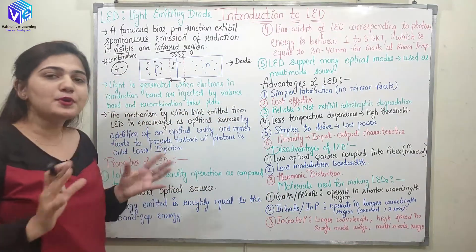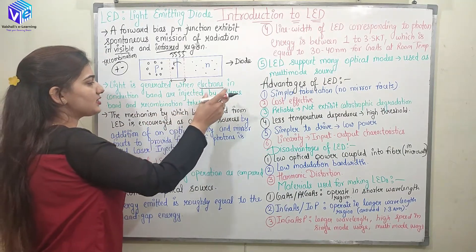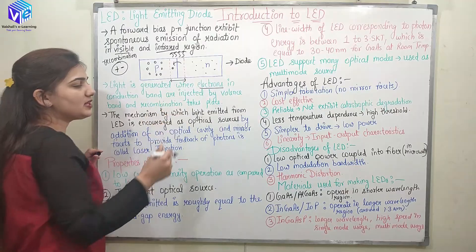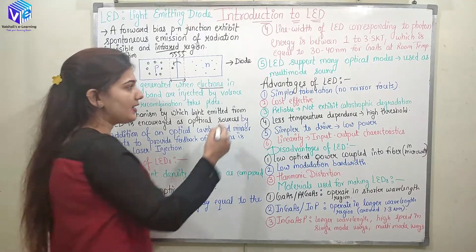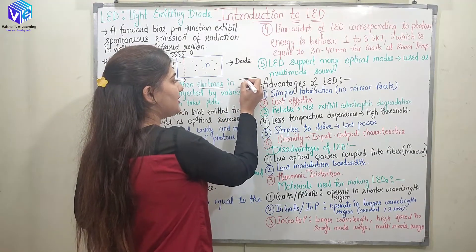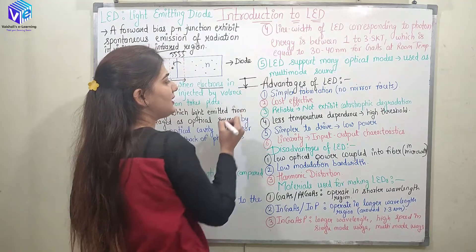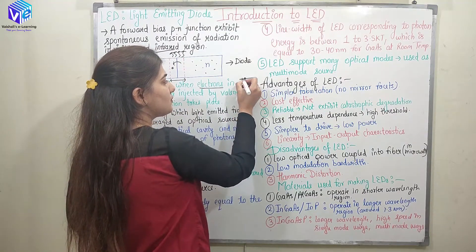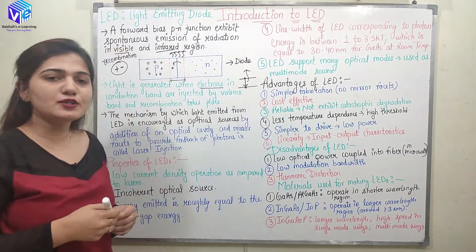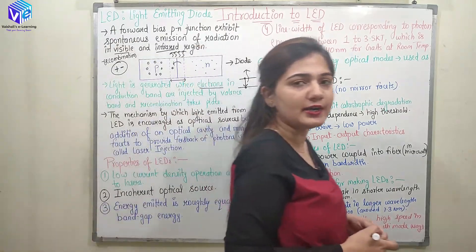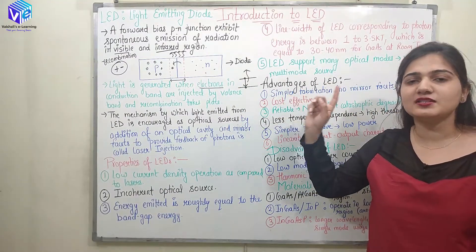The working principle: light is generated when electrons in the conduction band are injected into the valence band and recombination takes place. The conduction band is the high energy state and the valence band is the low energy state. When electrons come from a higher energy state to a lower energy state, energy is released — because energy can never be created or destroyed. When energy decreases, the released energy is in the form of light.